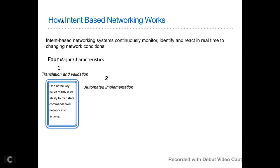The second pillar is automated implementation. We are not going to ask any network engineer to type CLI commands on switch one, switch two, or switch three — none of that. Everything works as an overlay across every domain, interconnected, to achieve your business intent. Once the policy is defined by your network manager, the intent-based networking system software manipulates the network controller resources to create the desired state and enforce the policy — automatically, knowing exactly where the endpoints are and where the configuration needs to be applied.